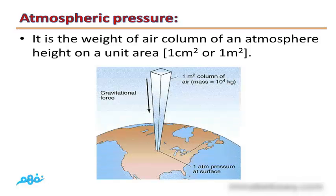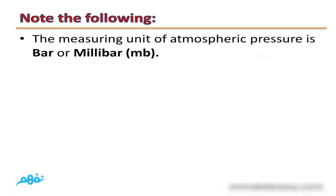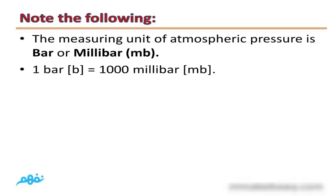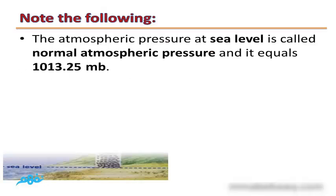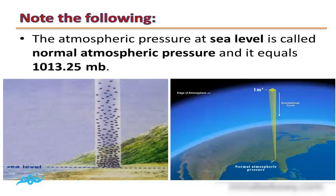Atmospheric Pressure is the weight of an air column of atmosphere height on a unit area — 1 cm² or 1 m². The measuring unit of atmospheric pressure is bar or millibar (mb), where 1 bar equals 1,000 mb.